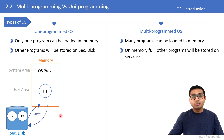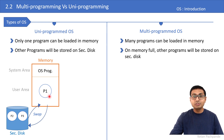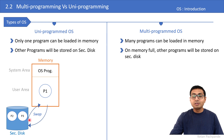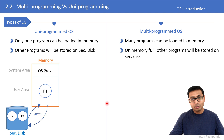If the OS wants to execute another program, say P2, but P1 is already loaded in memory, the OS needs to do swapping of processes between memory and the secondary disk. One process from the secondary disk will go into memory, but before that we have to shift process P1 from memory to the secondary disk. That's how with swapping, the OS can load the next program and then execute it.